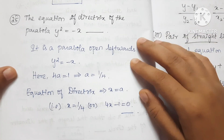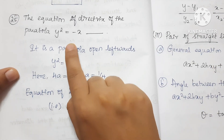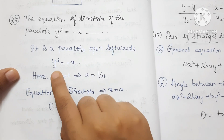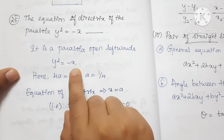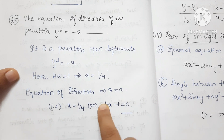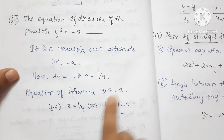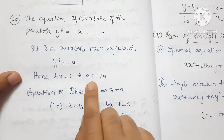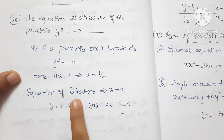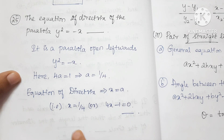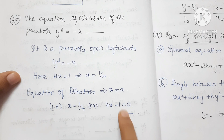Question 25: Find the equation of the directrix of the parabola y²=-x. Since the parabola opens leftward, comparing with y²=-4ax we get 4a=1, so a=1/4. The equation of the directrix is x=1/4, or equivalently 4x-1=0.